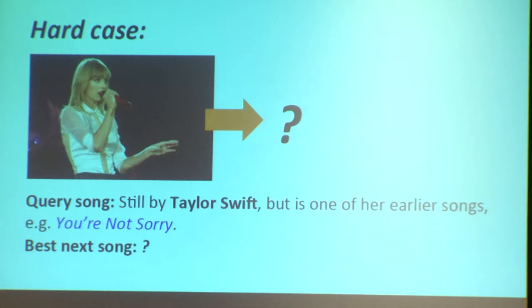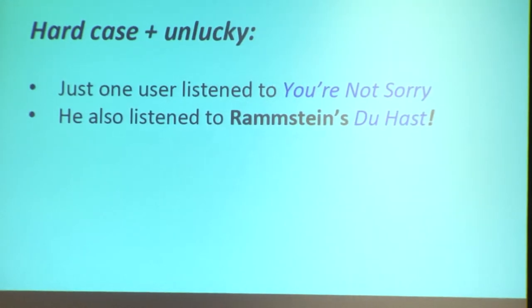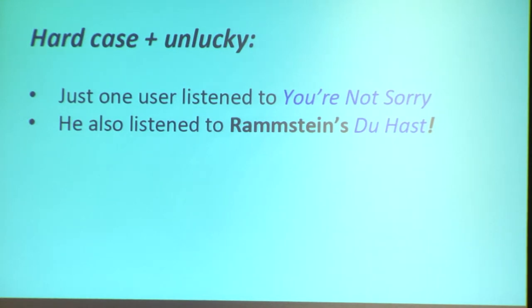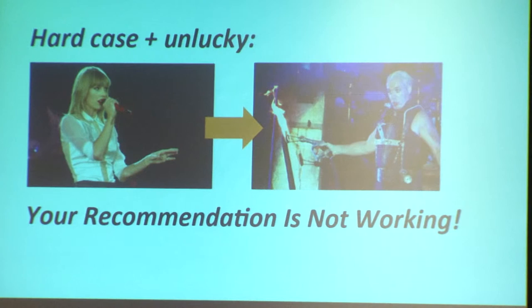Let's say we listen to Shake It Off by Taylor Swift. By simple collaborative filtering you can find that it's all about the bass by Meghan Trainor — both collaborative filtering and Prod2Vec should work; it's an easy case. But now let's say we have an early Taylor Swift song that doesn't have much support in the data. And we get unlucky — the only observation in the training set is one user who listened to the song and also listened to Rammstein and Duhas. So when you model recommendations based on co-occurrences, the only thing you can recommend is Rammstein, and obviously for most users the recommendation looks like it's not working.